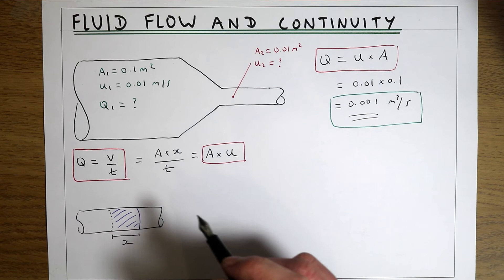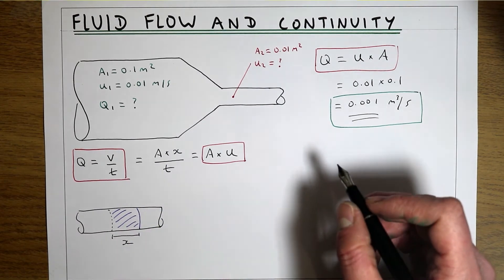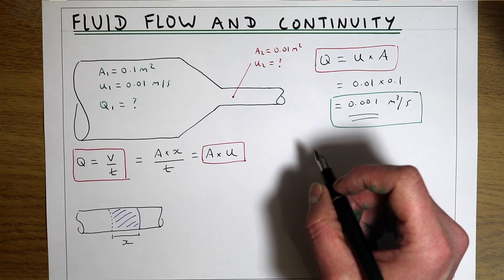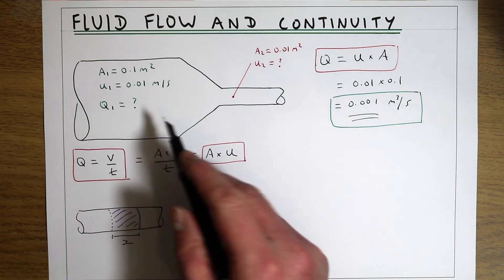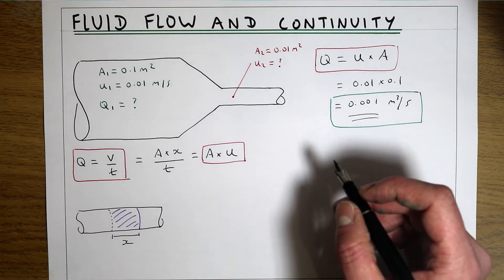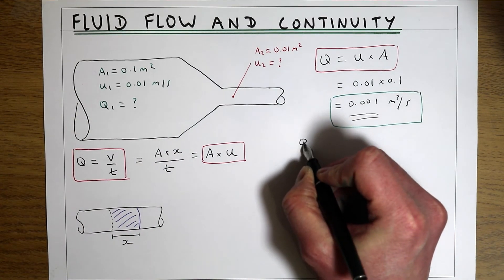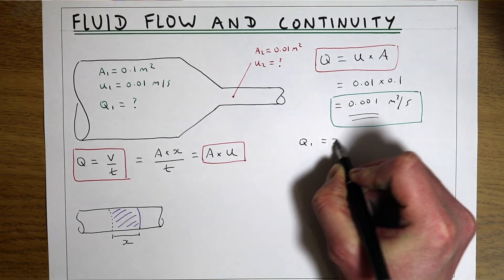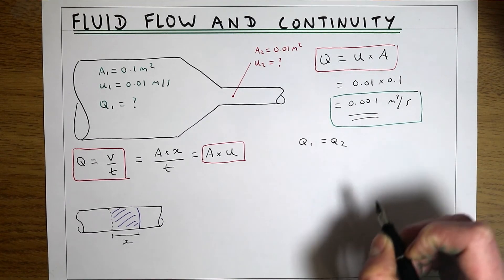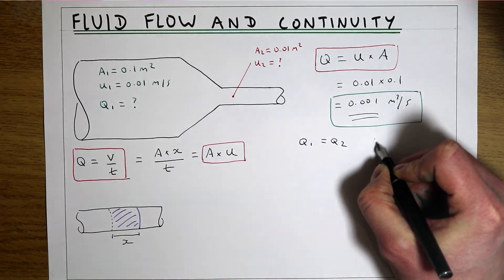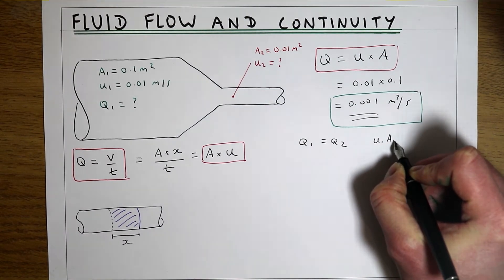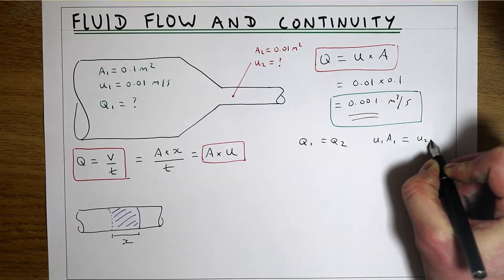What we also know is if this is a steady incompressible flow, then we know that the flow rate or discharge must be the same at every point inside this system. So we know that Q1 must equal Q2, and therefore u1×A1 must equal u2×A2.